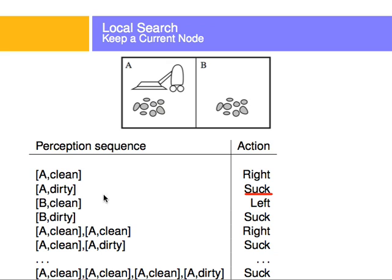Looking at the percepts of this vacuum cleaner: if it perceives it's in room A and room A is clean, it'll move right to room B. If it perceives it's in room A and it's dirty, it will suck the dust. Similarly, if it's in room B and it's clean, it will go left to room A.